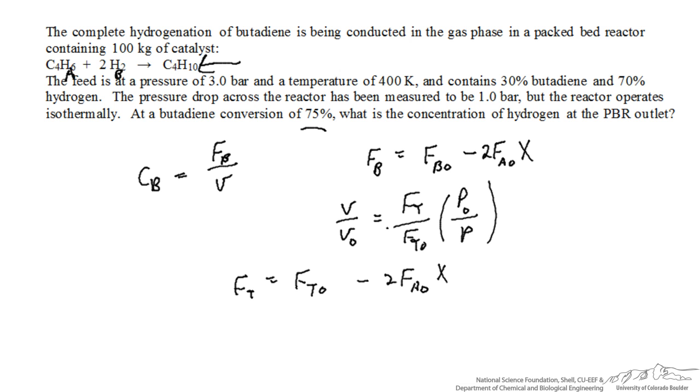Then we need to put it in terms of this ratio that's shown in the equation above, and so FT over FT0 is going to be equal to 1 minus 2 times FA0 over FT0, which is the mole fraction of A in the feed times the conversion. We are given information on what YA0 is.